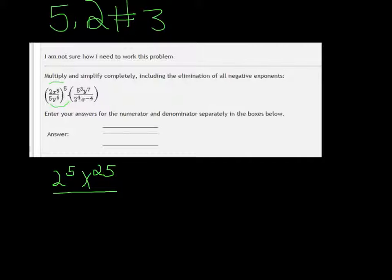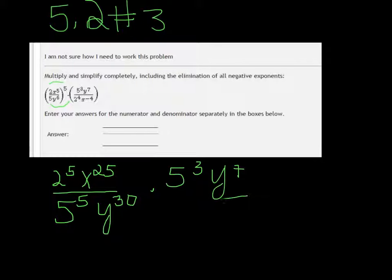Then in the bottom, you'll have 5 to the 5th. Again, don't worry about what that is. And y to the 30th, because you're going to multiply the 5 and the 6. Alright, now we're going to have all that times 5 to the 3rd, y to the 7th, over 2 to the 4th, x to the negative 4th.